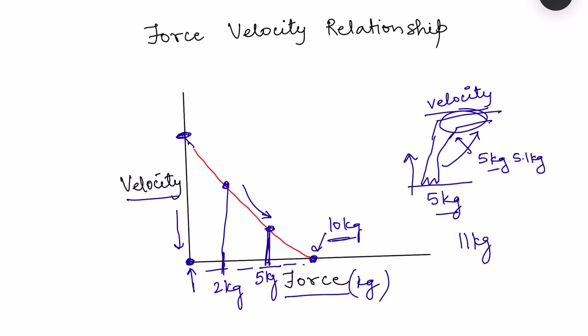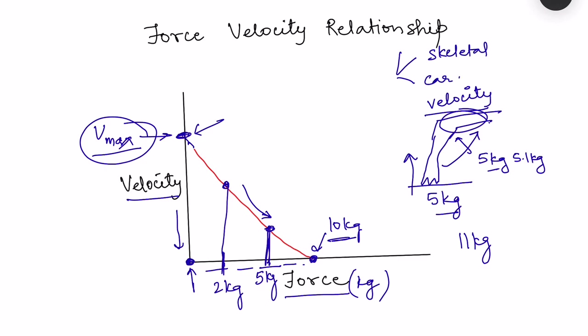On the other hand, when force is zero, if we extrapolate this graph, there is a maximum velocity of shortening. You can try this: without any load, extend your hand and try to flex it with maximum strength of contraction. In that case there is no external load for the muscle to lift, so all the strength of the muscle is being translated into maximum velocity — this is known as the maximum velocity of contraction. This force-velocity relationship is similar for both skeletal muscle and cardiac muscle.